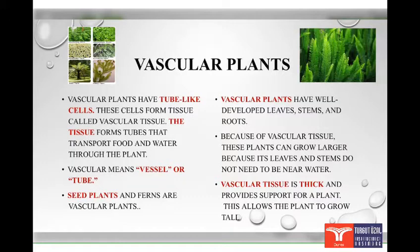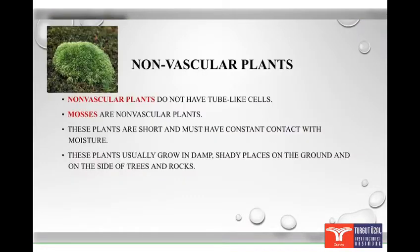This allows the plant to grow tall. Non-vascular plants do not have tube-like cells. Mosses, for example, are non-vascular plants. These plants are short and must have contact with moisture. These plants usually grow in damp, shady places, on the ground and on the side of trees and rocks.